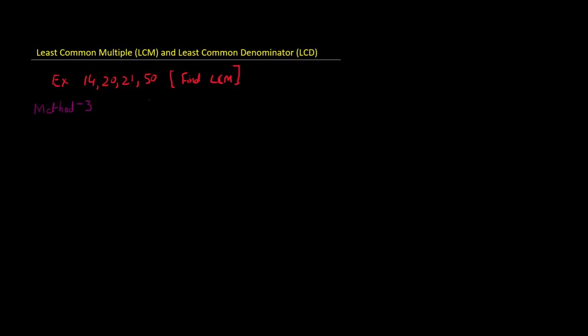In this method we are essentially finding the same thing: the maximum occurrence of any prime number, using a similar formulation to what we did with prime factors. We write all four numbers and it's better to write them in ascending order to reduce mistakes. Divisibility rules are again applicable and very useful here.